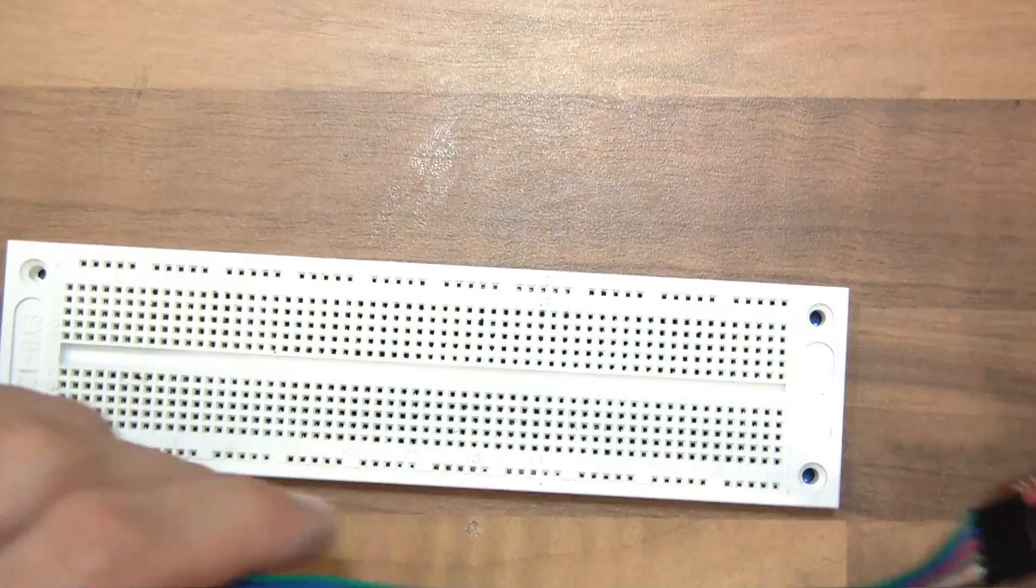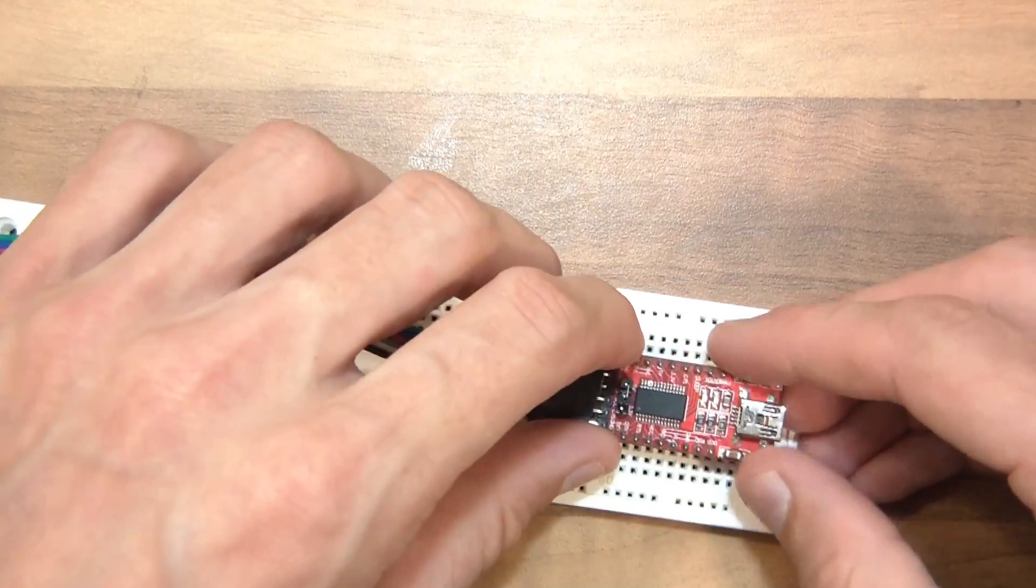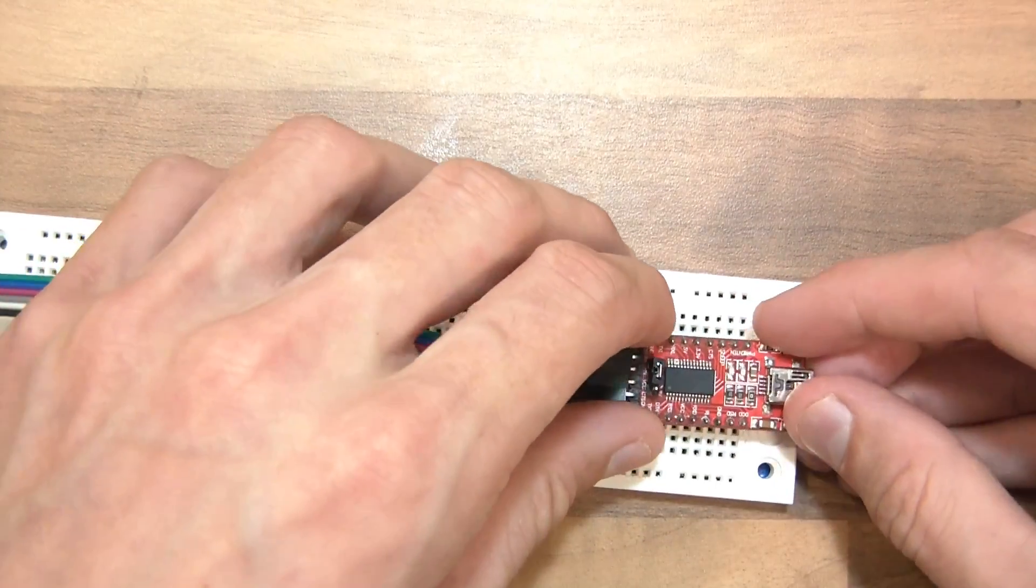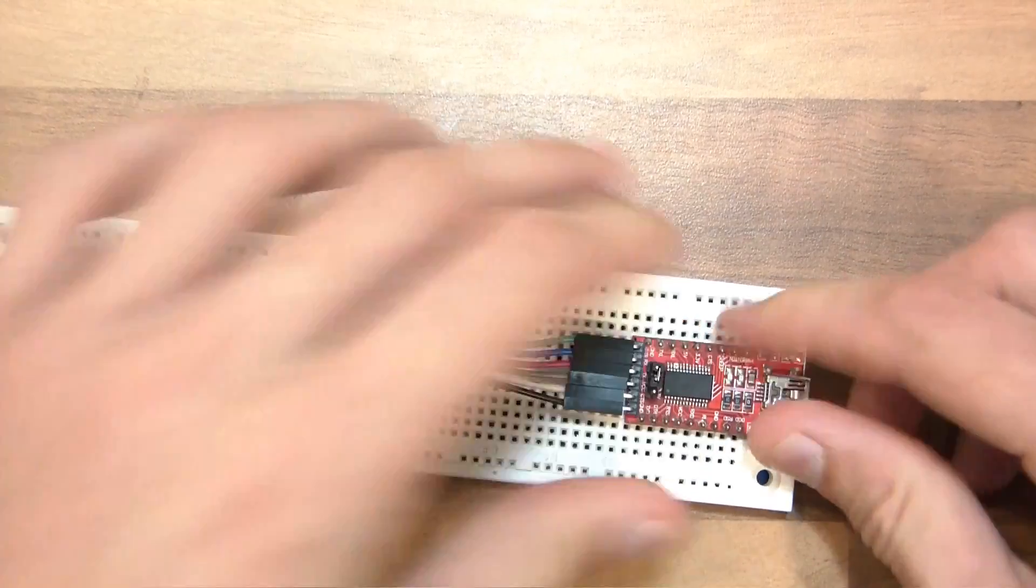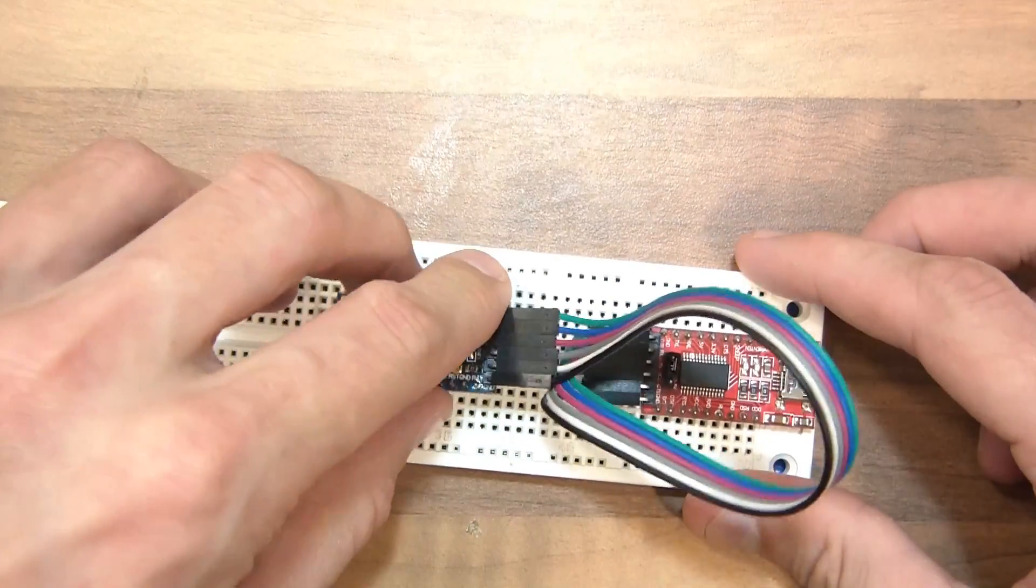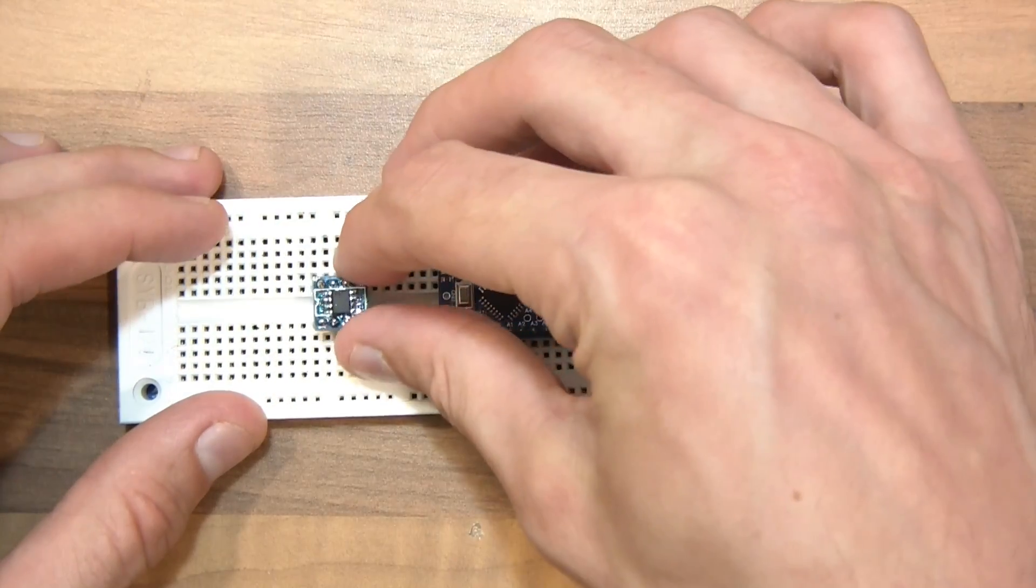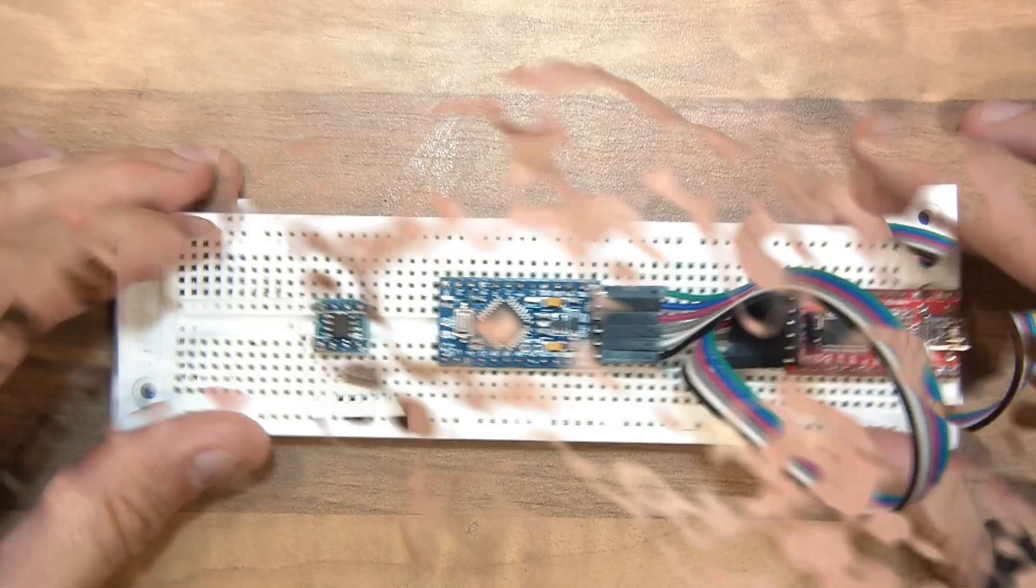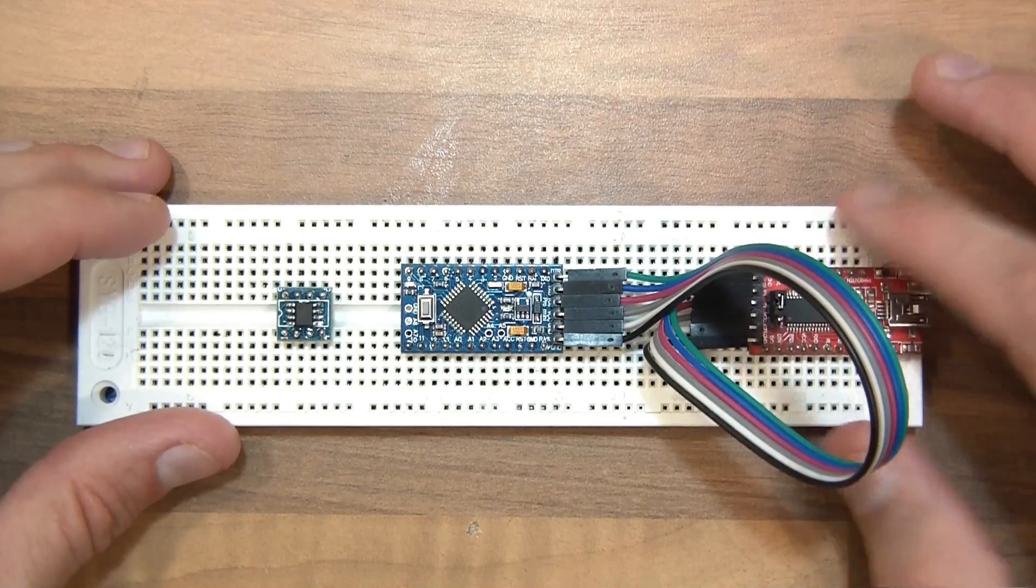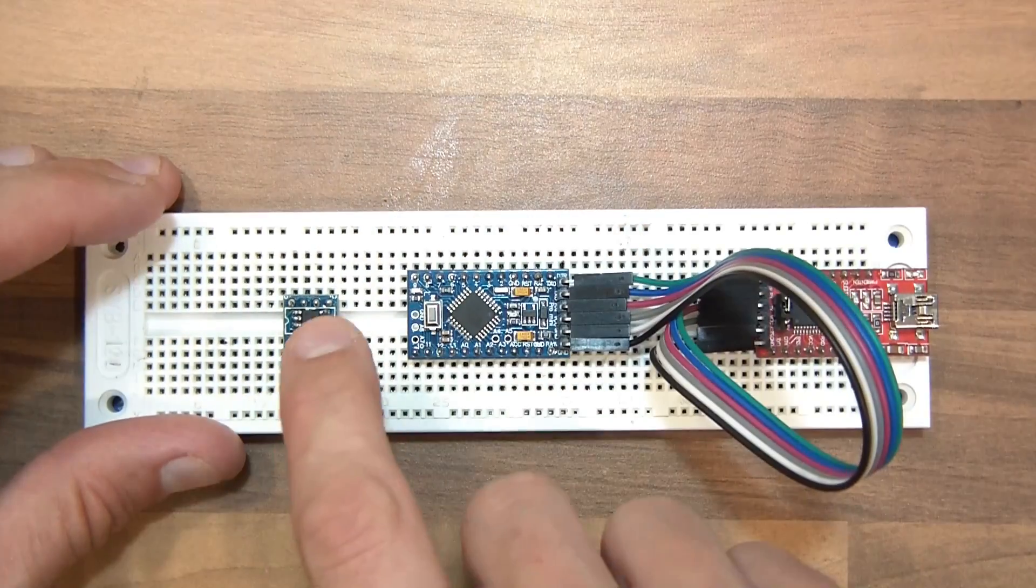So I will start by plugging the UART into the breadboard. The chip itself can go here. Ok so I have got the FTDI, the Arduino and the chip.